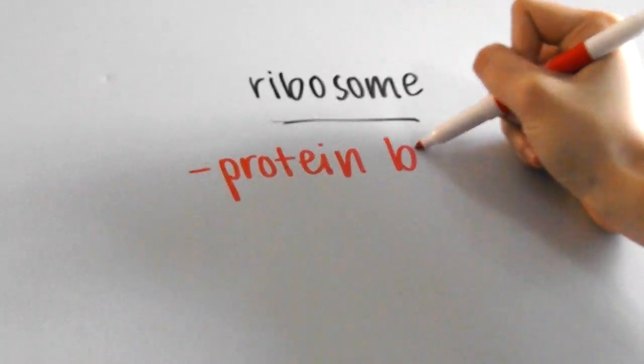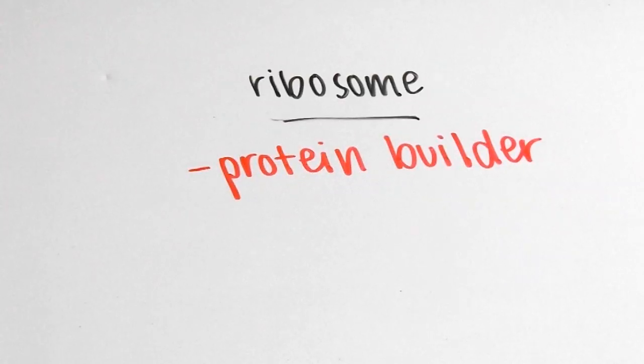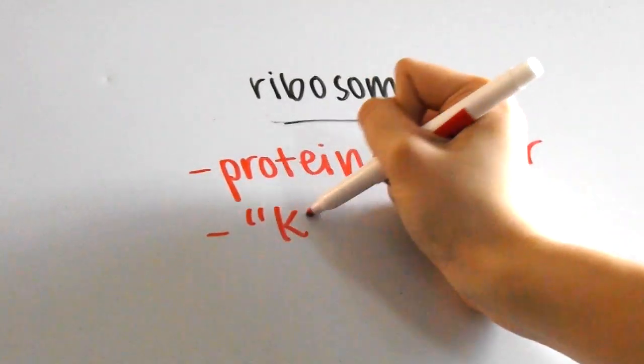And can you guess what the ribosome is? It's the kitchen since you're cooking the turkey or making the protein in it.